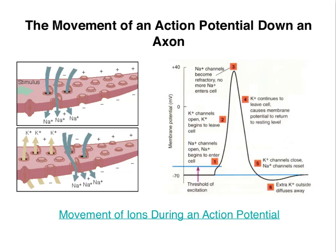In the previous video, we saw that the action potential is initiated when a threshold is reached, and a depolarization phase begins where voltage-gated sodium channels open and sodium ions move down their electrical and chemical gradient into the cell. Eventually those sodium channels close as the inactivation gate blocks them, and voltage-gated potassium channels open, causing the cell to hyperpolarize. Because the sodium channels close more quickly than the potassium channels, there is an undershoot and a refractory period, during which the cell takes some time to return to rest.